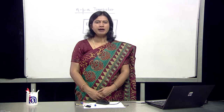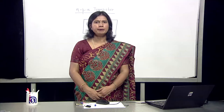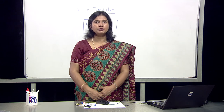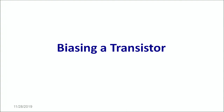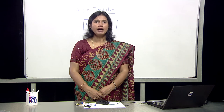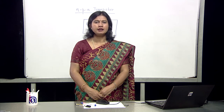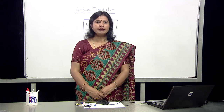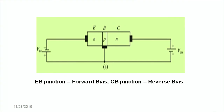Let's understand the biasing in a transistor. By biasing, we mean how we connect it in a circuit and provide appropriate voltage so that a transistor becomes a functional device. In general, a transistor is biased such that one portion remains forward biased while the other portion remains reverse biased. For example, in this NPN transistor, the emitter-base junction is forward biased and the collector-base junction is reverse biased.